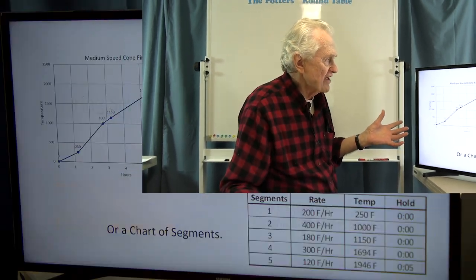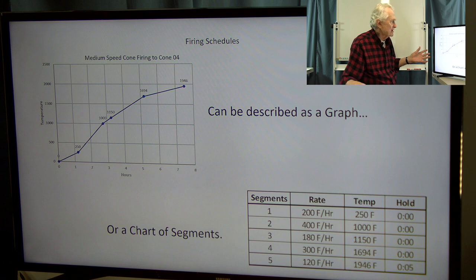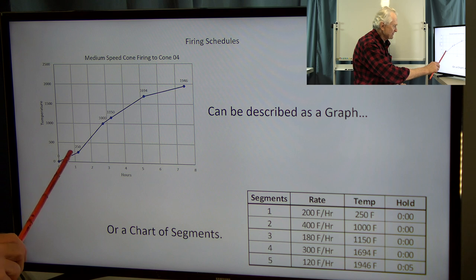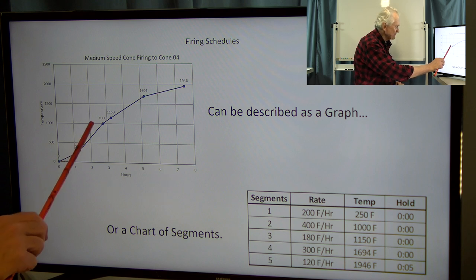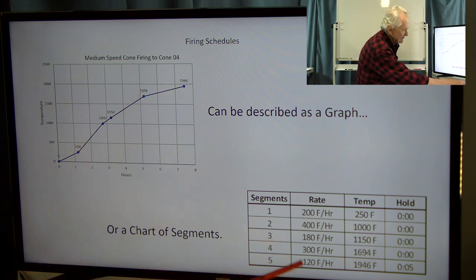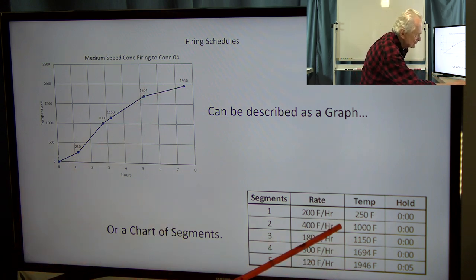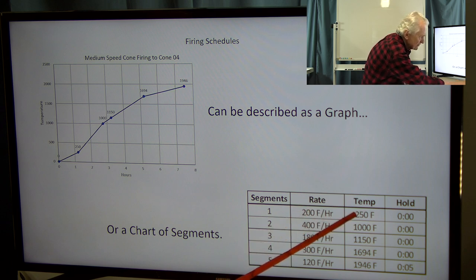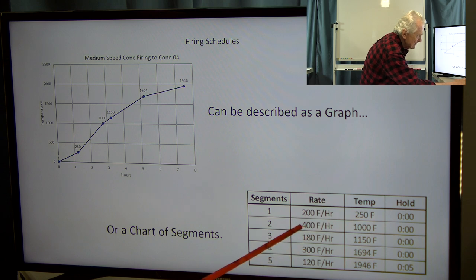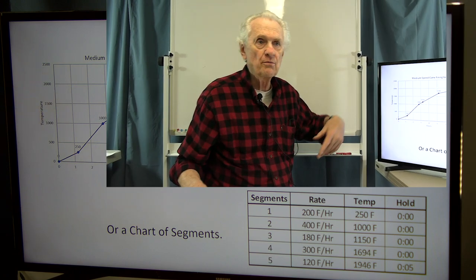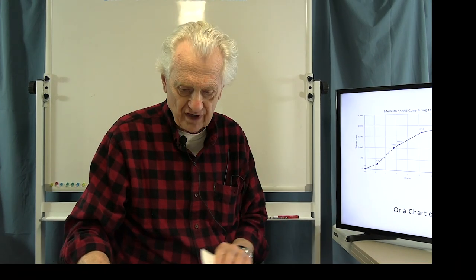On this next chart, firing schedules can be described as a graph that shows the different segments or portions of the firing, the different heating rates, and the temperatures. Or they can be described as a chart showing the same information in numerical form, which might be a little easier to read quickly.